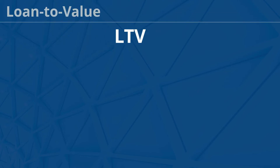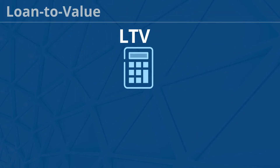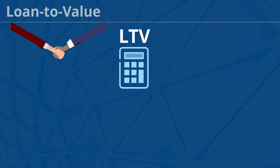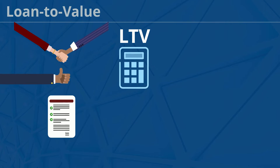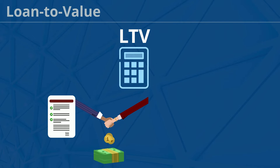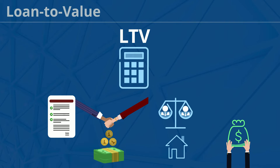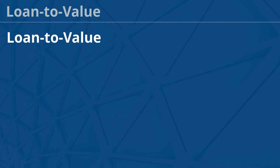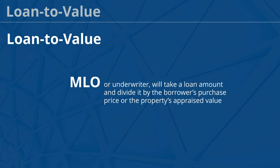Loan-to-value, also known as LTV, is a calculation made to determine whether a borrower qualifies for a program or not. Programs require that borrowers put a specific amount down or have a specific amount of equity in their property to obtain a loan. To determine a borrower's loan-to-value, the mortgage loan originator or underwriter will take a loan amount and divide it by the borrower's purchase price or the property's appraised value, whichever is lower.